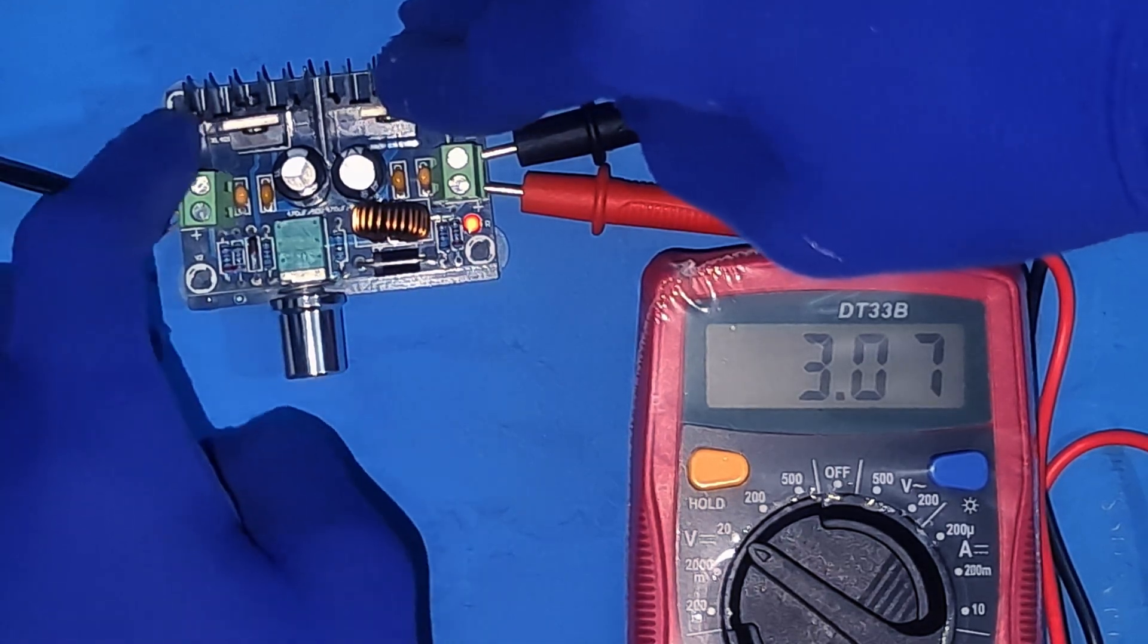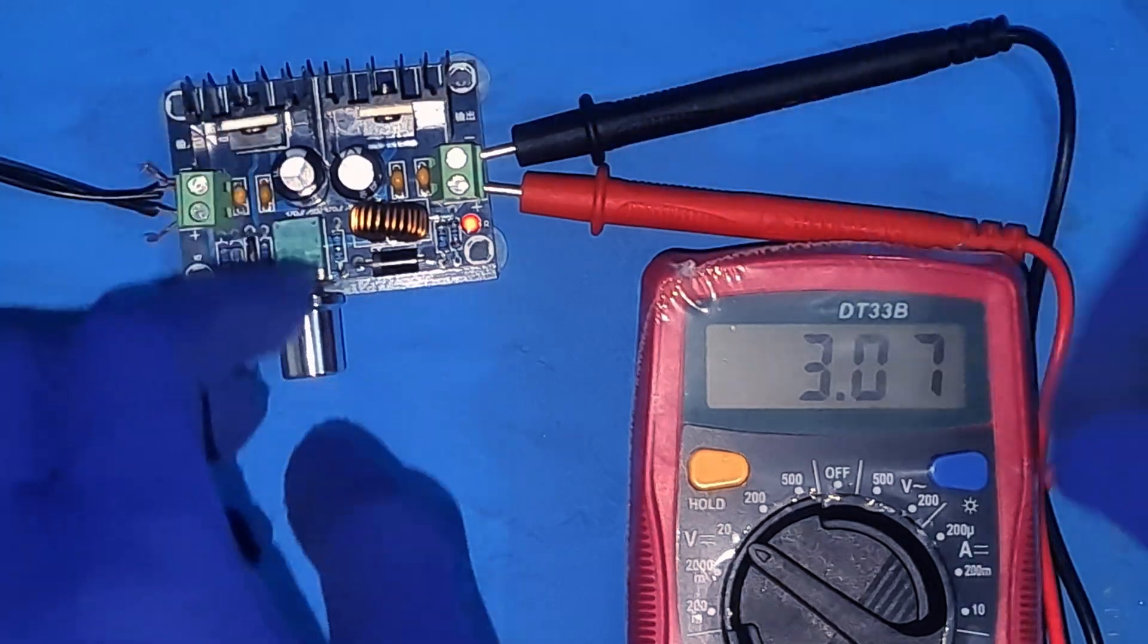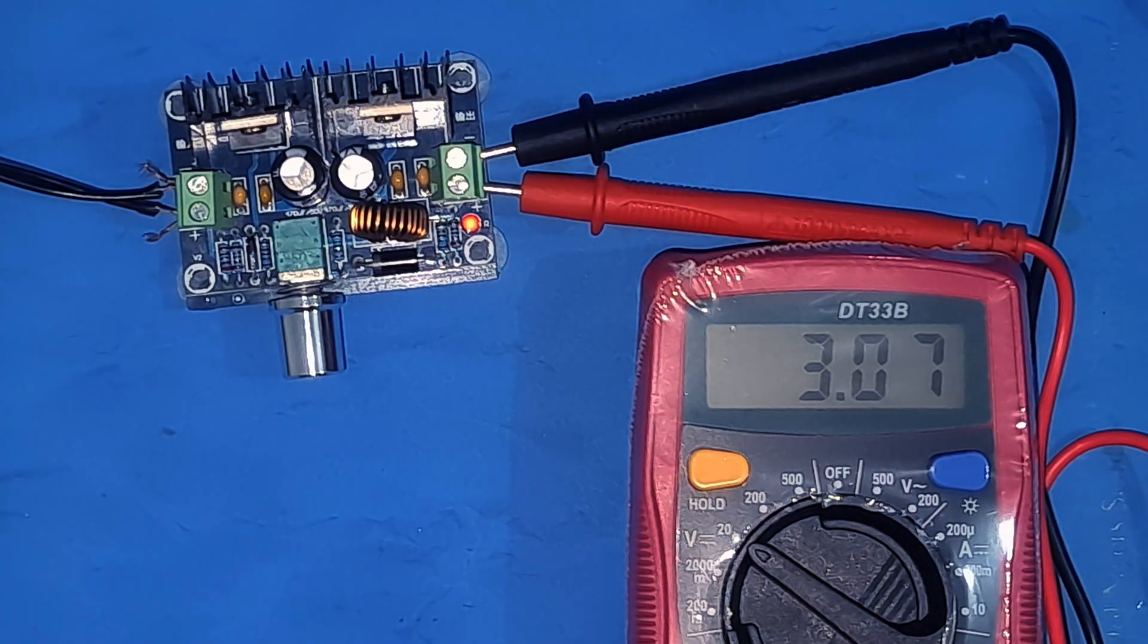I set it to 3.00 volts. But as you can see, the small diameter of this knob makes precise adjustments tricky. A larger knob would make this much easier.